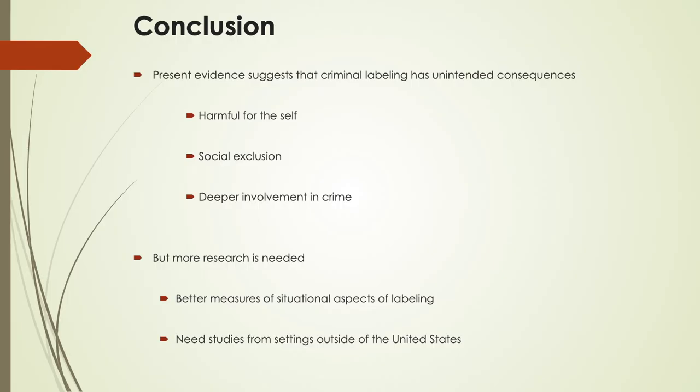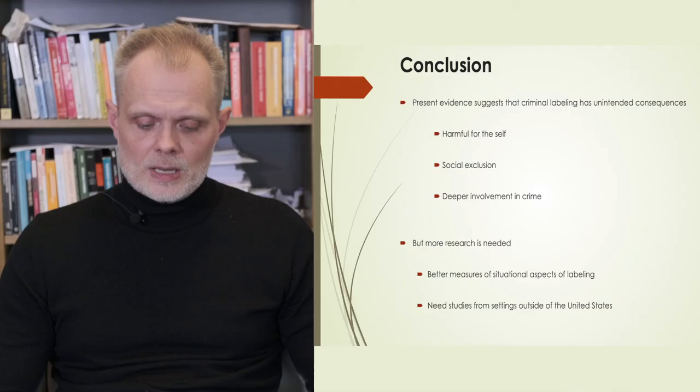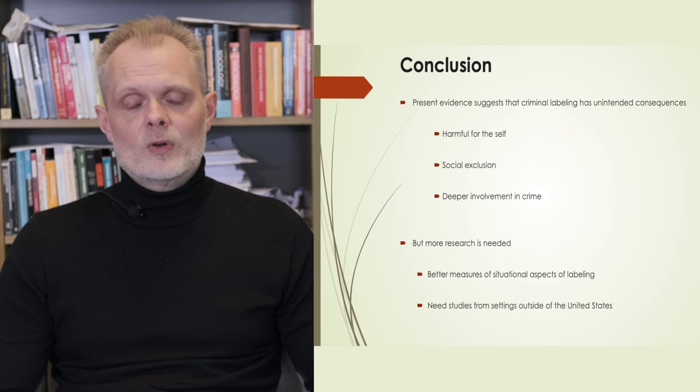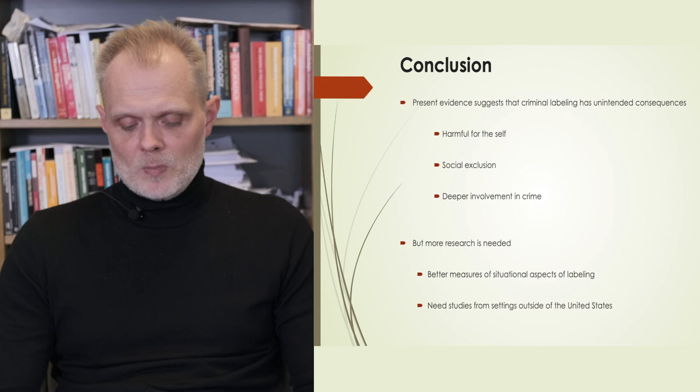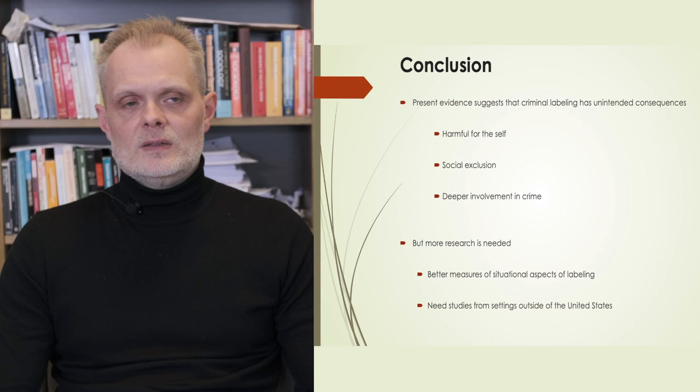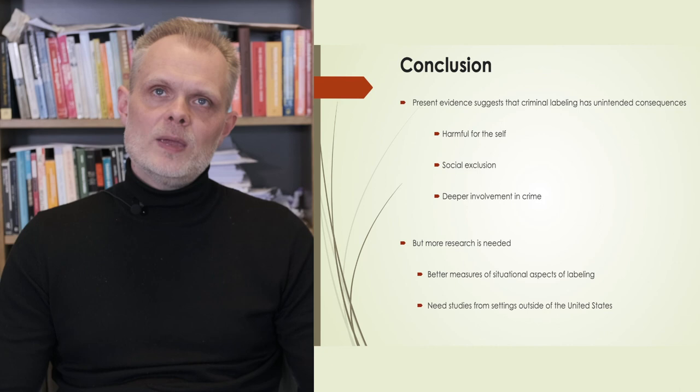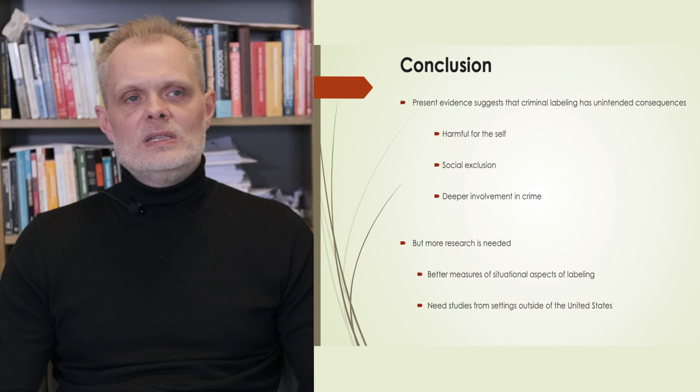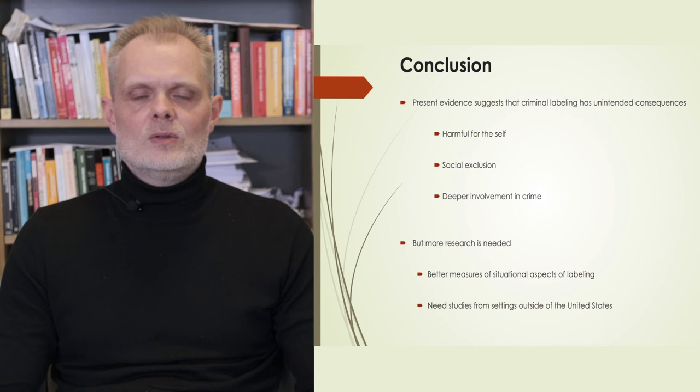In conclusion, present evidence suggests that criminal labeling has unintended consequences. It may be harmful for the self, it may produce social exclusion, and it may lead to deeper involvement in crime. There is more research needed. We need better measures of the situational aspects of labeling, for example, how individuals experience devaluation in the situation. There is really not a lot of work that goes into the situations of labeling individuals. And finally, we need more studies from settings outside of the U.S.